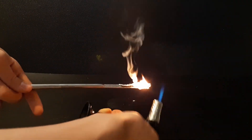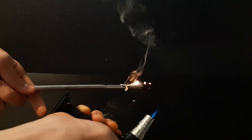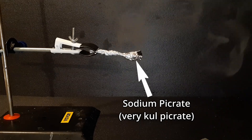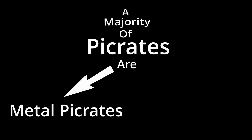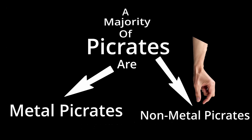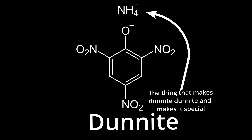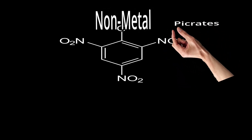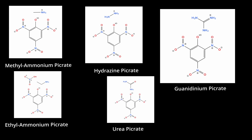As you can see, TNP isn't that energetic on its own. It has some energetic properties — it explodes when confined and burns quite well — but nothing really special. It can be made much more energetic and dangerous through its salts, known as picrates. A majority of picrates are metal picrates, but there are non-metal picrates too, such as dunite — the ammonia salt of TNP and the most produced picrate of all time — as well as methyl ammonium picrate, ethyl ammonium picrate, hydrazine picrate, guanidinium picrate, and urea picrate.